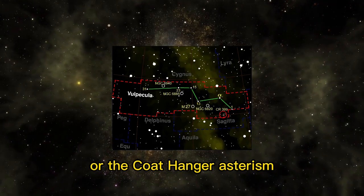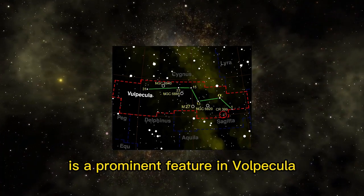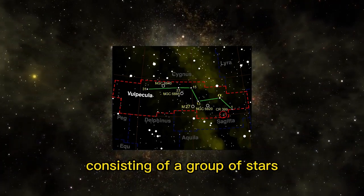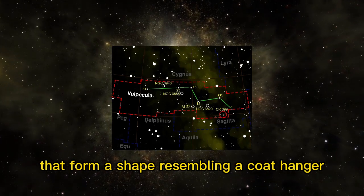Brocchi's Cluster, or the Coathanger asterism, is a prominent feature in Vulpecula, consisting of a group of stars that form a shape resembling a coathanger.